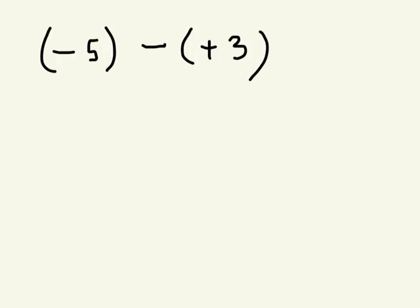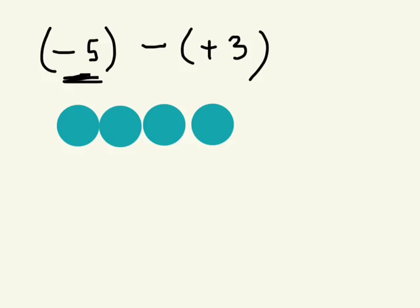So for this question, we always want to look at what we're starting with. So I'm starting with a negative five. So what am I going to draw? How many counters? Five. Good, we're going to draw five negative counters. So one, two, three, four, five.